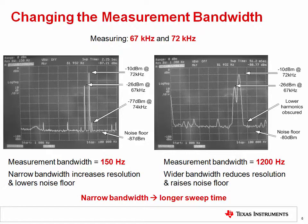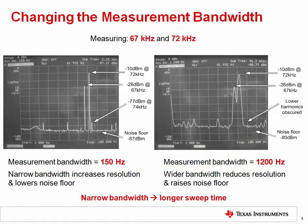The images above show a spectrum analyzer being used to measure signals at 67 kHz and 72 kHz, using different measurement bandwidth settings of 150 Hz and 1200 Hz. The narrow measurement bandwidth of 150 Hz is better at resolving the discrete signals, and also reduces the noise floor because the amount of noise captured inside the bandpass filter is smaller. The wide resolution bandwidth of 1200 Hz loses information because the wider bandpass filter captures both signals at once. So when making noise measurements, take care to use a measurement bandwidth that provides good resolution.